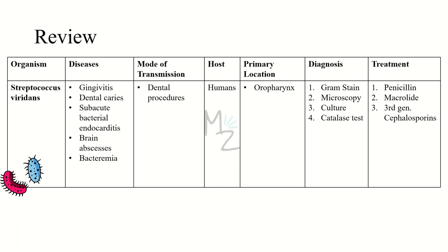Let's review quickly. Streptococcus viridans is responsible for causing gingivitis, dental caries, subacute bacterial endocarditis, brain abscesses, and bacteremia. It is transmitted by dental procedures; humans are the only host with no animal reservoirs. The primary location is the oropharynx. Diagnosis is based on gram staining, microscopy, culture, and catalase tests. Treatment is with penicillin, macrolides, and third-generation cephalosporins. Hope you enjoyed it — like and share the video, and I'll catch you soon. Assalamu Alaikum.